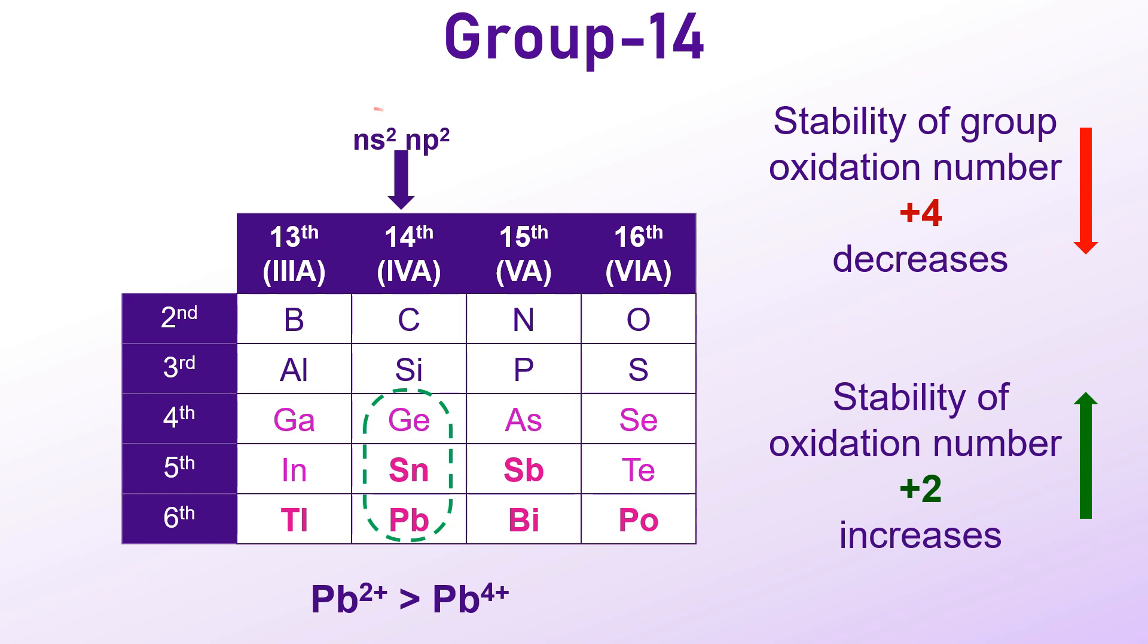Once again, the two electrons in the outer NS orbital remain inert and do not participate in the bond formation, illustrating the inert pair effect.